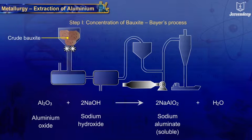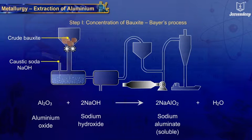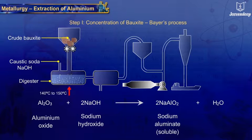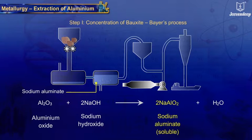Step 1 – Concentration of bauxite. Crude bauxite ore is crushed and then treated with hot concentrated caustic soda solution (NaOH solution) in a tank called a digester under high pressure for 2 to 8 hours at 140°C to 150°C. Aluminium oxide, being amphoteric in nature, dissolves in aqueous sodium hydroxide, resulting in the formation of water-soluble sodium aluminate.